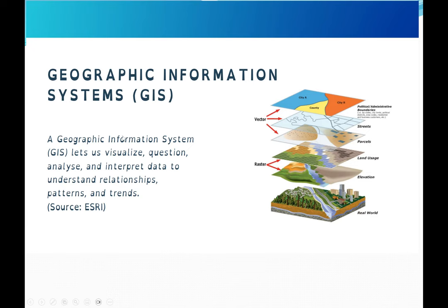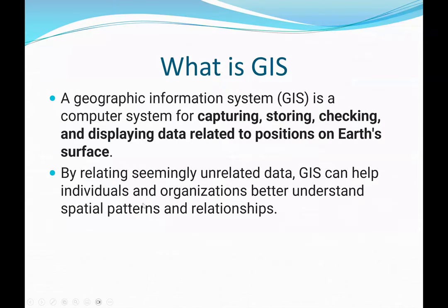What is the definition of a geographic information system? A geographic information system, GIS, lets us visualize, question, analyze, and interpret data to understand relationships, patterns, and trends. Another definition is that GIS is a computer system for capturing, storing, checking, and displaying data related to positions on Earth's surface.